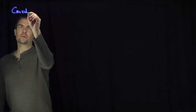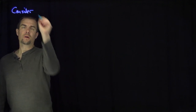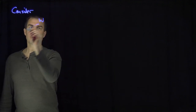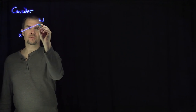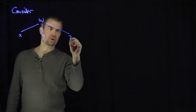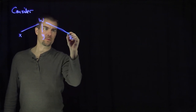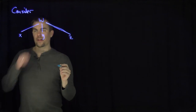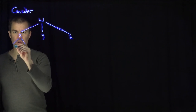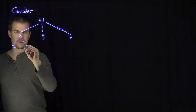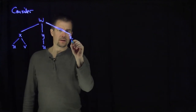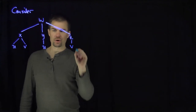Let's consider this configuration. Let's consider w, which will be a function of x, y, and z. So w is the dependent variable. And let's suppose that x is a function of u and v, y is a function of u, and z is a function of v.